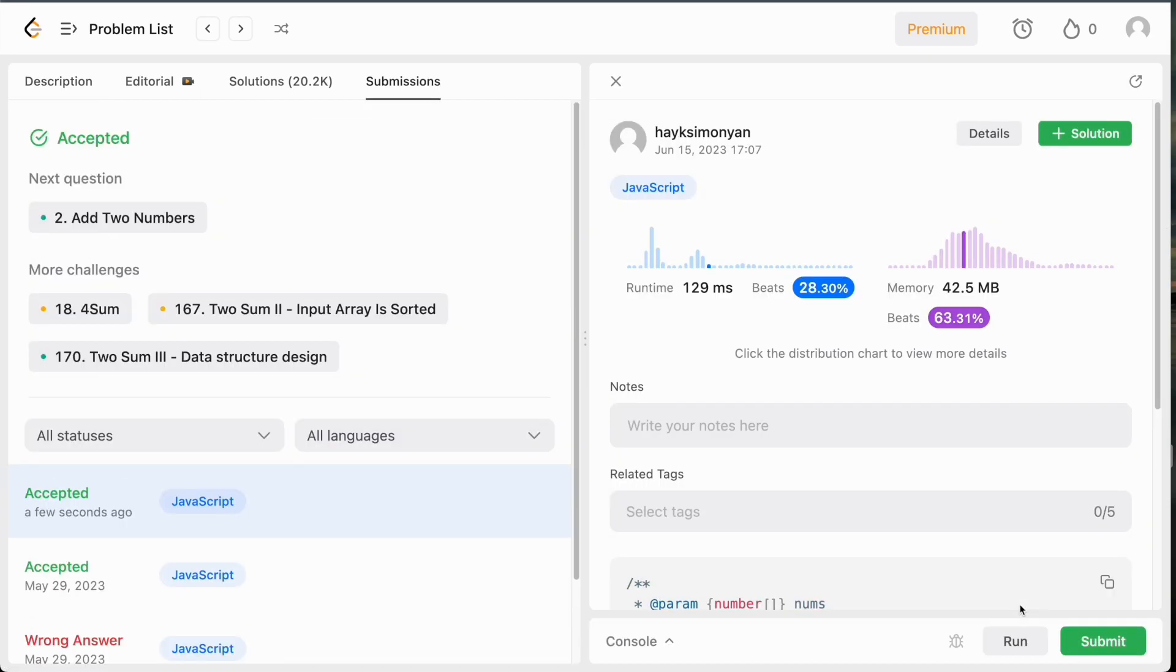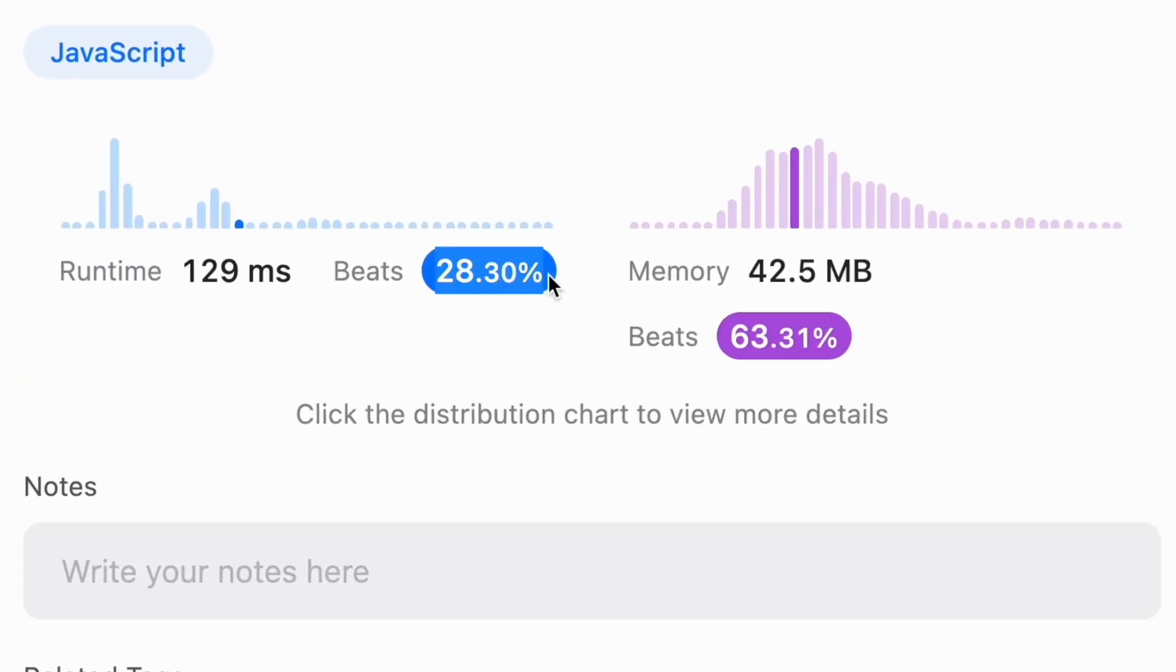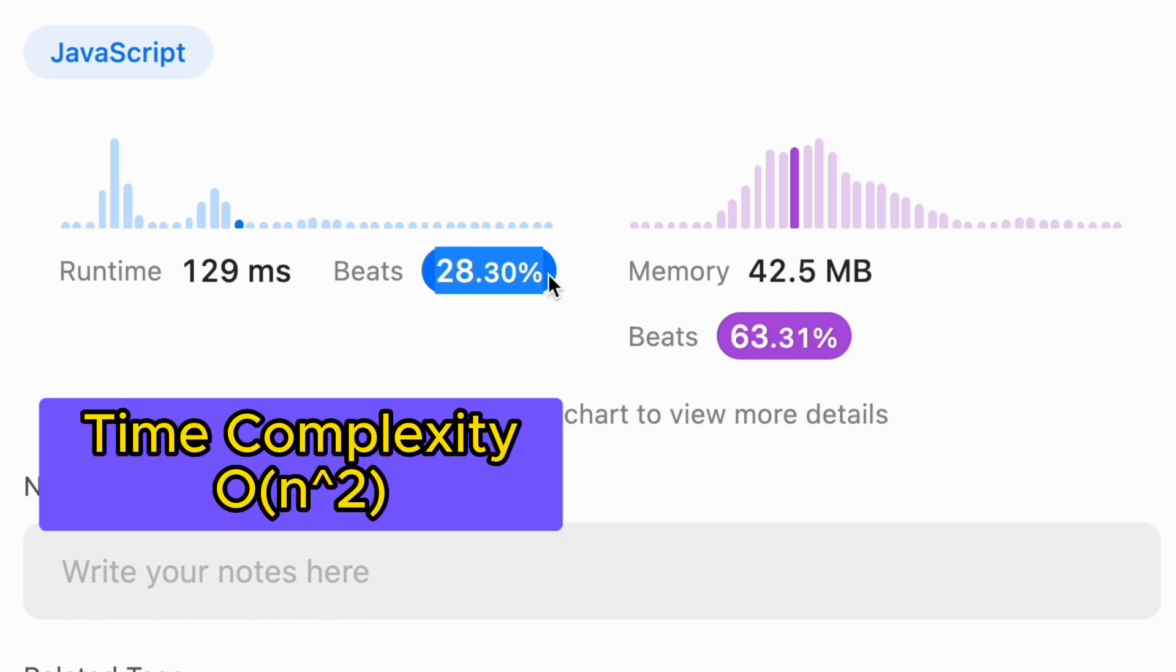Although this approach works, it becomes inefficient as the array grows larger. As you can see, the runtime of this is 28% compared to all other solutions. Because we need to loop through all pairs of numbers, resulting in a time complexity of O(n²).